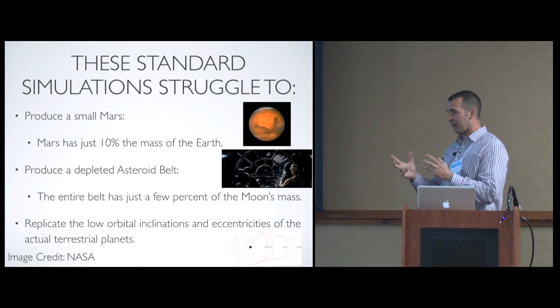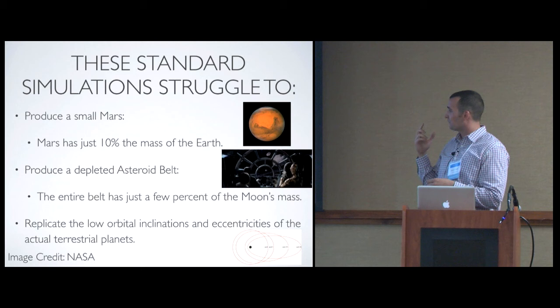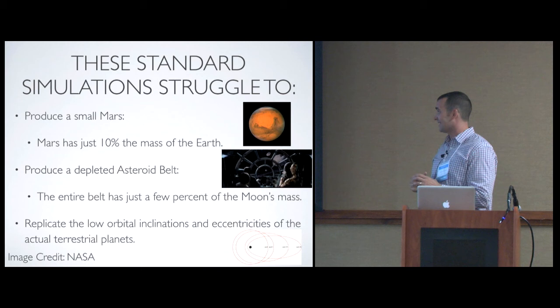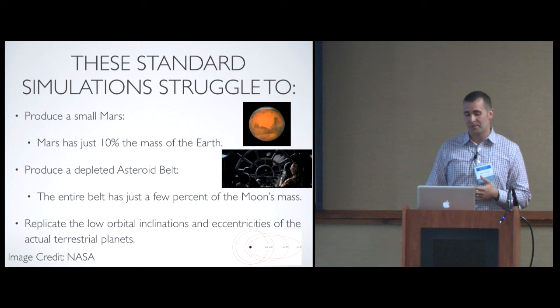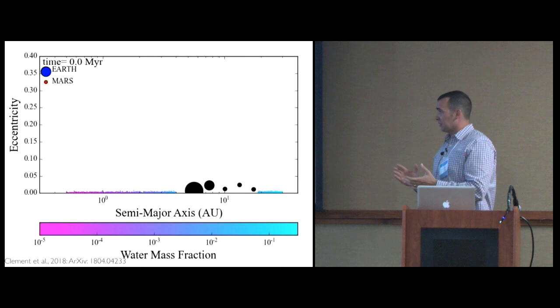So these are the biggest problems with these standard initial condition simulations. You produce too large of Mars. You don't deplete the asteroid belt enough. The actual asteroid belt, if you add up all the asteroids in this whole region, which is from 2 to 4 AU, you have just a few percent the mass of the Moon, and the Moon is just a percent the mass of the Earth. So there's not a lot of stuff out there. And also, the orbital inclinations and eccentricities of the terrestrial planets formed in these simulations are almost always too high.